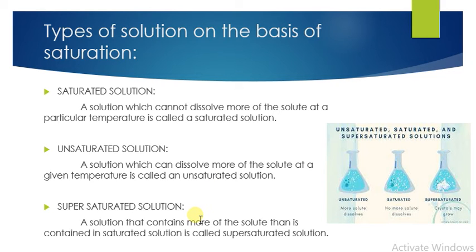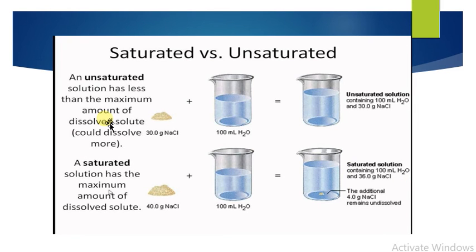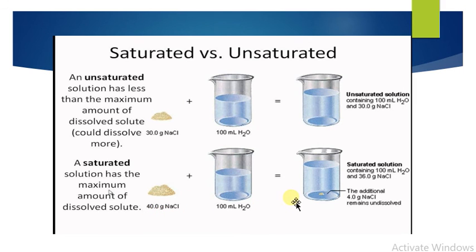The third type is the supersaturated solution. A solution which contains more dissolved solute than a saturated solution can hold is called a supersaturated solution. For example, with salt: if 30 grams of NaCl dissolves in 100 ml of water, it is unsaturated because it can still dissolve more solute. As we increase the amount to 40 grams, the solubility decreases.